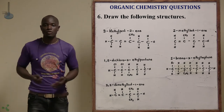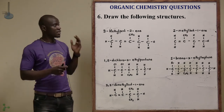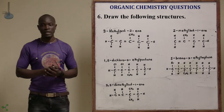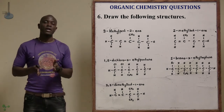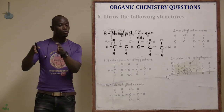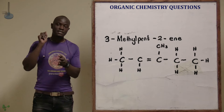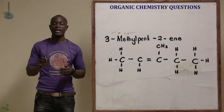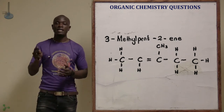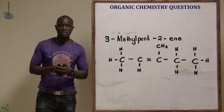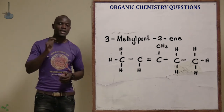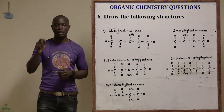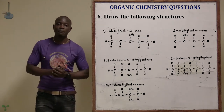Draw the following structures. Letter A is 3-methylpent-2-ene. Identify the longest chain: pent-2-ene means 5 carbons with the double bond at carbon number 2. Draw 5 carbons, place the double bond at carbon 2, then populate the branches. The methyl branch appears at carbon 3 — that is 3-methyl. That is the structure of 3-methylpent-2-ene.